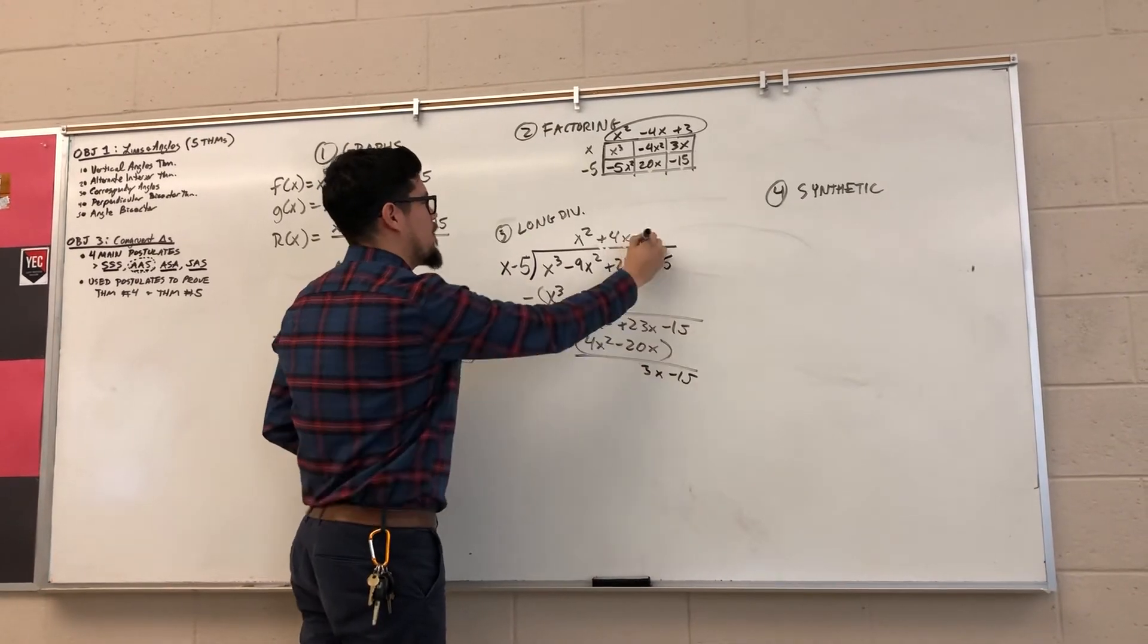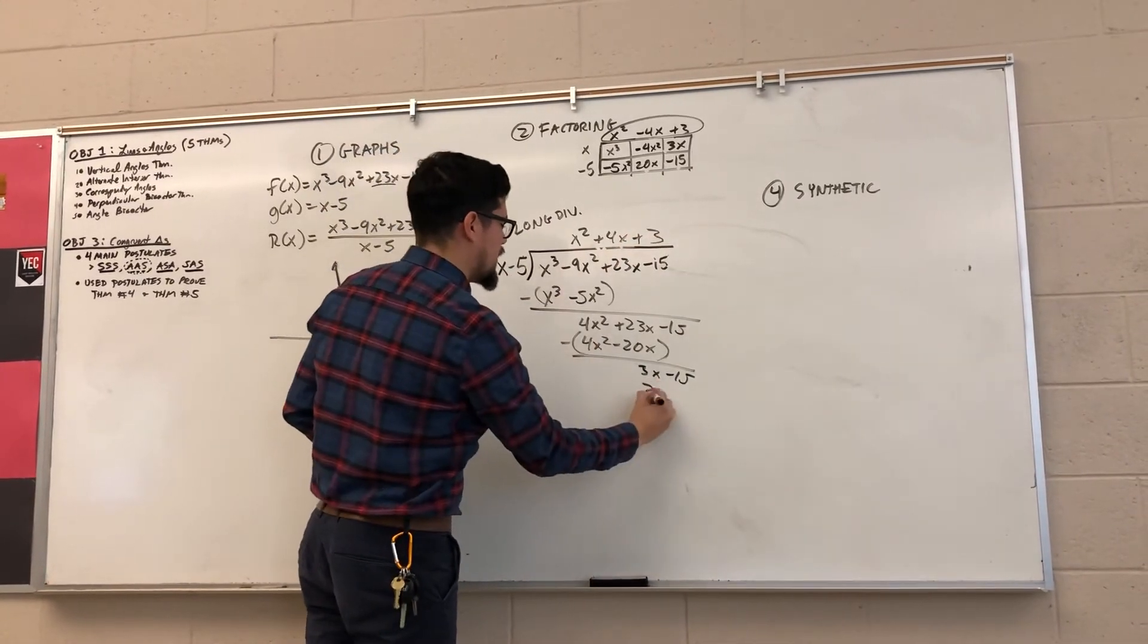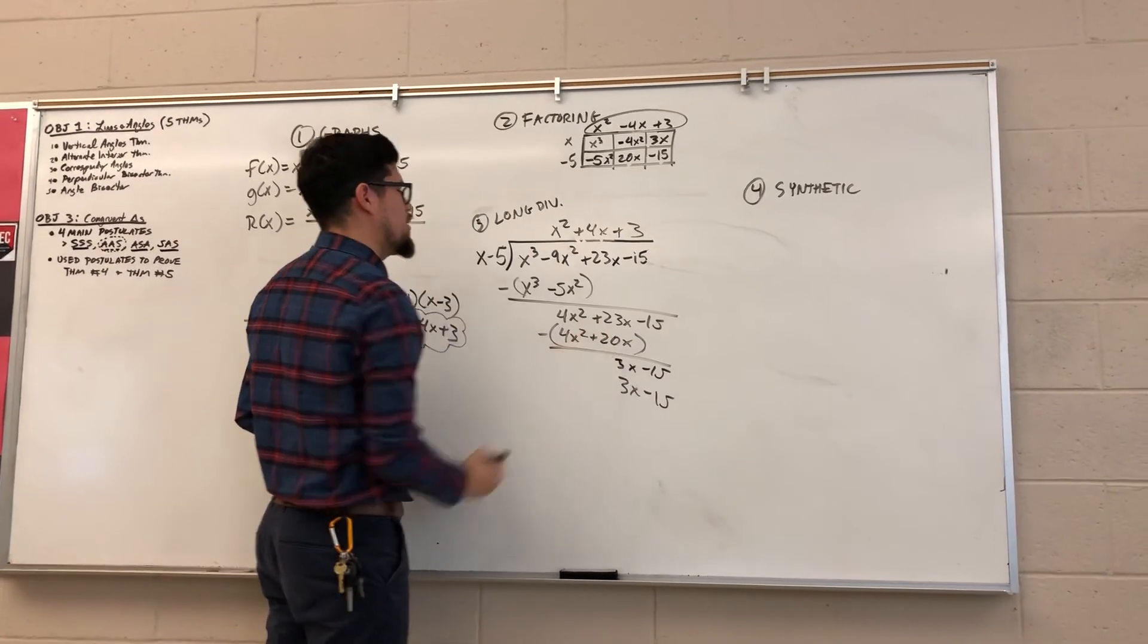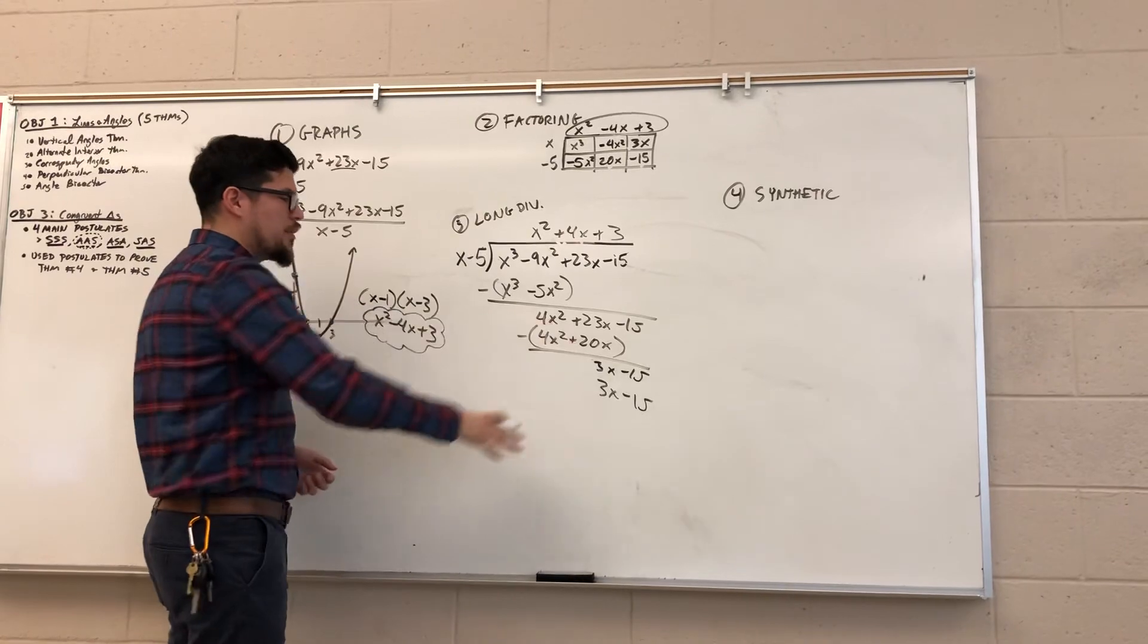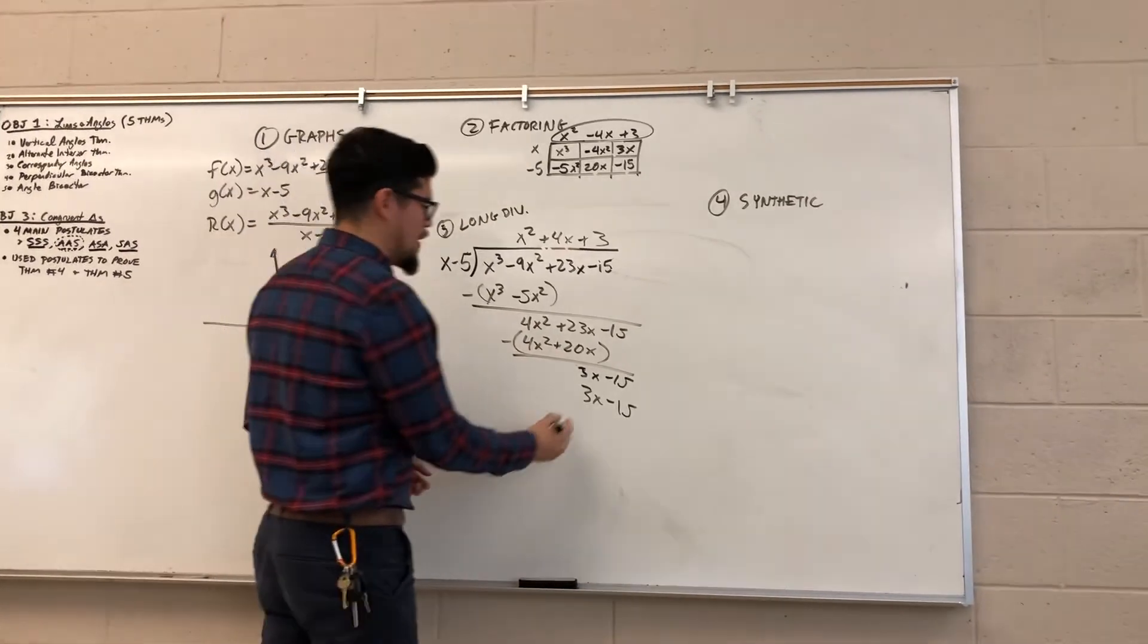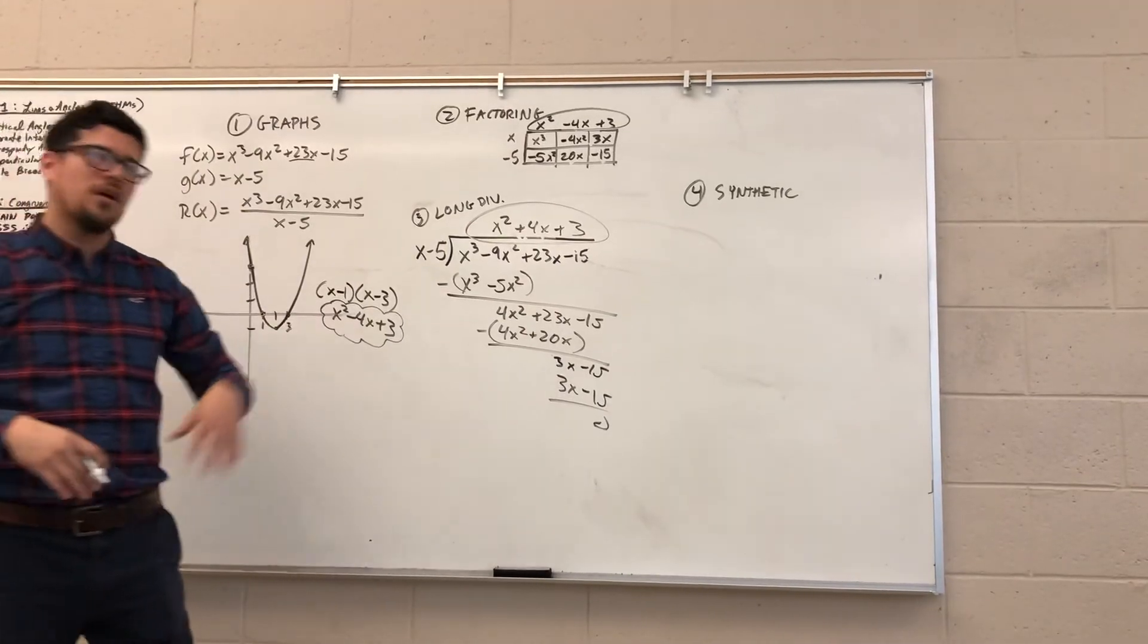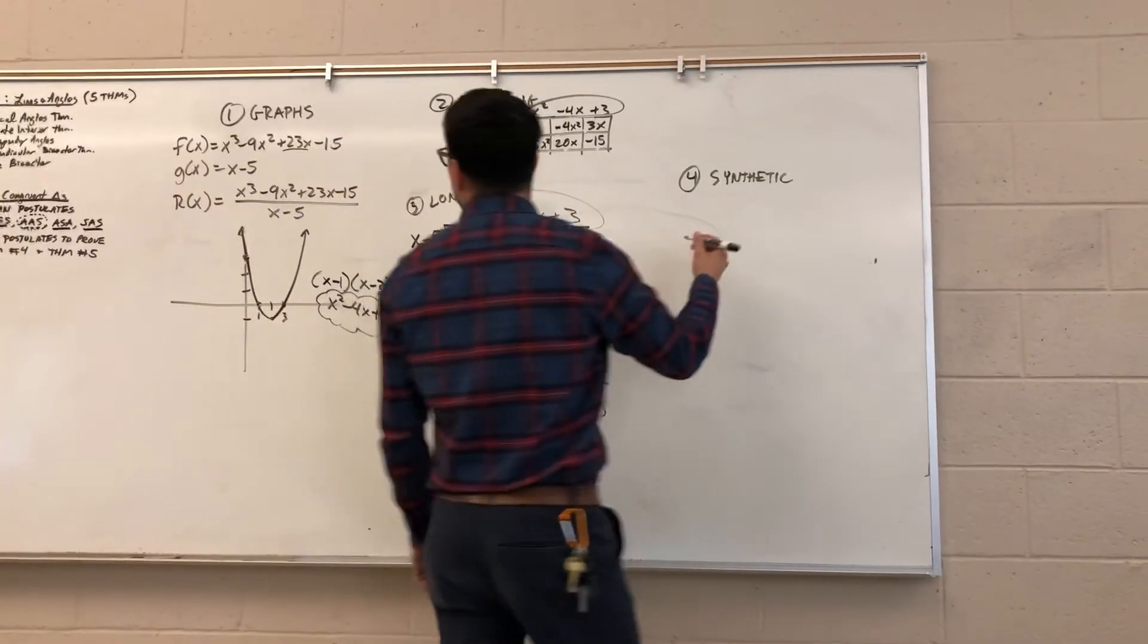x will go into 3x positive 3 times, and I get 3x minus 15. So I think that this guy was supposed to be a positive 20 somewhere. There might be a mistake right there. I didn't catch it, but I'm under a lot of pressure. I'm sorry. This looks like x squared plus 4x plus 3. We'll verify that in a second with synthetic.